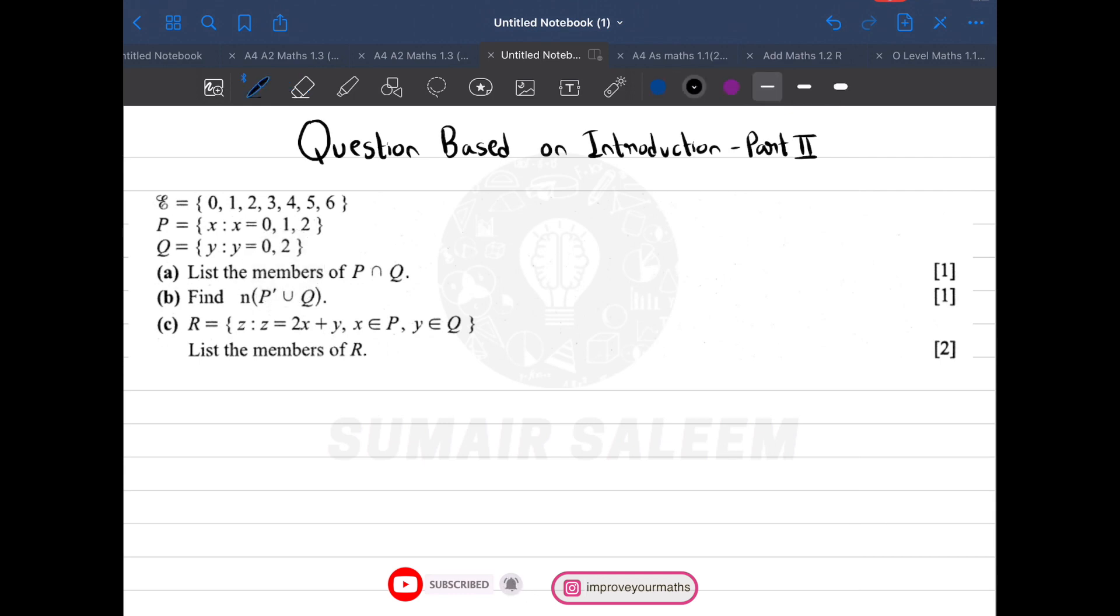You are supposed to list the members of P intersection Q. So what's P intersection Q? All elements common in P and Q. So what's common? 0 is common and 2 is common in both, so my answer will be {0, 2}.